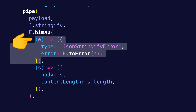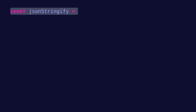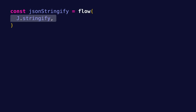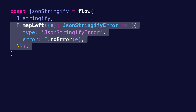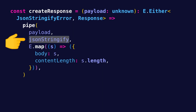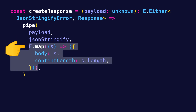In this specific case of JSON stringify, having to map the unknown error every time might get annoying. So let's define our own JSON stringify function that will always give us a JSONStringifyError when it fails. This can be accomplished by doing function composition with flow, where we first JSON stringify and then mapLeft the value to the JSONStringifyError. So if we use our JSON stringify function in createResponse, we only need to map the right value.